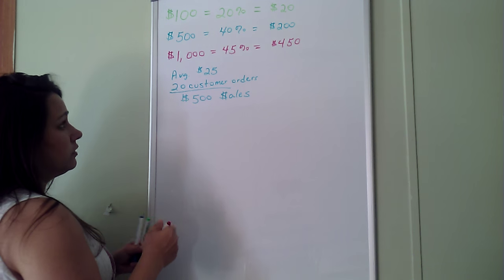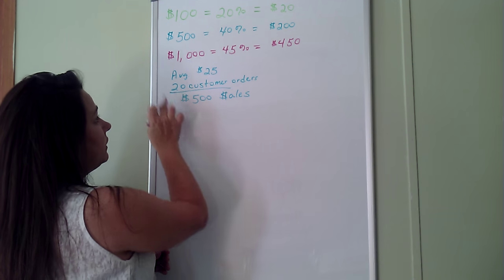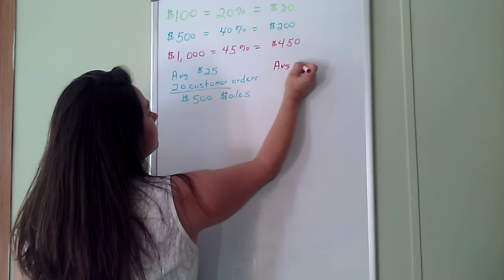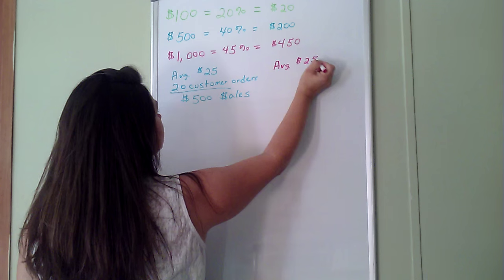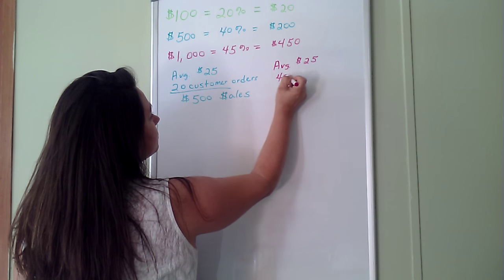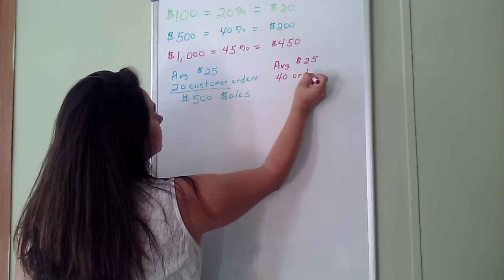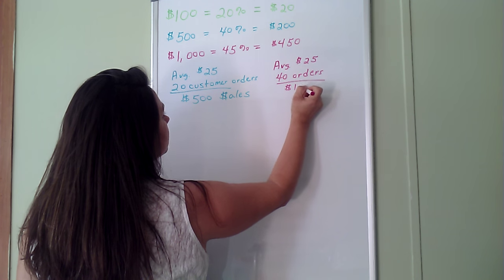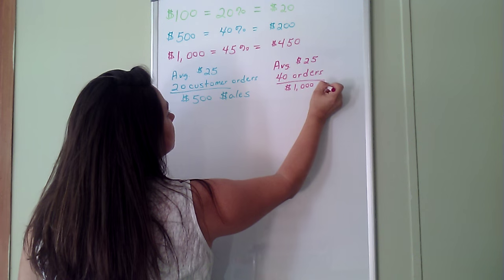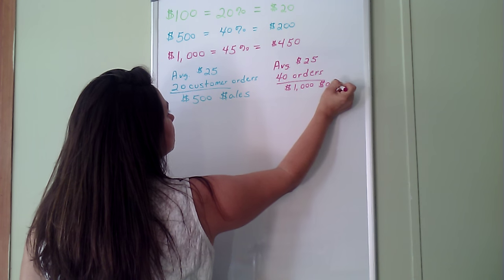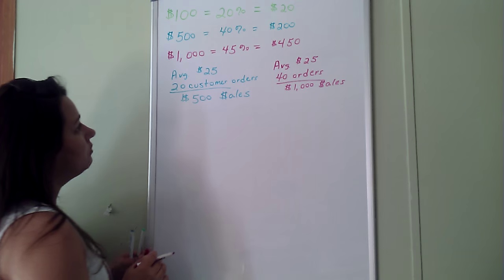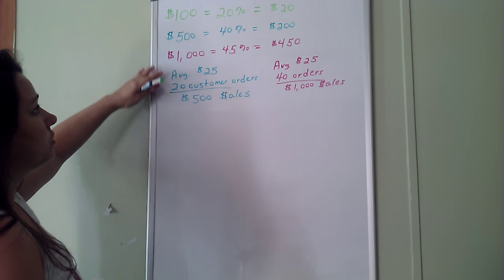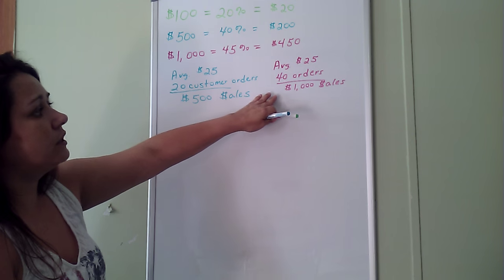To have the $1,000 order, we will just double everything except the average order stays the same. So the average order is $25, and 40 customers placing orders will result in a $1,000 order.